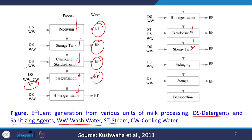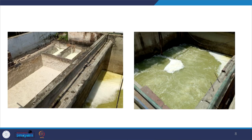ST stands for steam used during pasteurization, and CW stands for cooling water used at various stages. In all these processes effluent is generated, which is why overall we generate about 2.5 times the volume of the milk processed.